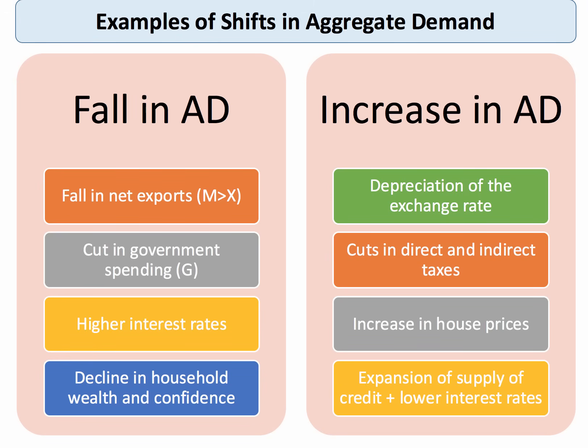On the other hand, we could see a period when aggregate demand is expanding — a shift in total spending on goods and services. Reasons include: the depreciation of the exchange rate, making exports more competitive in overseas markets; the government cutting a direct tax such as income tax or an indirect tax such as VAT; an increase in the average level of house prices causing consumer wealth and confidence to grow; or on the monetary side, the cost of a loan going down, or banks becoming more willing and able to lend to businesses and households. These factors would cause an outward shift of aggregate demand.